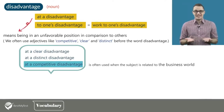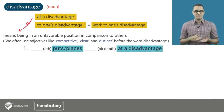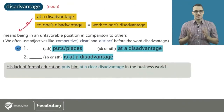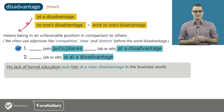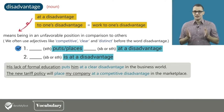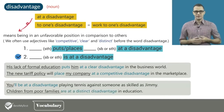So how do we use the phrase at a disadvantage? It can be used in two sentence patterns: something puts or places somebody or something at a disadvantage, and somebody or something is at a disadvantage. For example: his lack of formal education puts him at a clear disadvantage in the business world. The new tariff policy will place my company at a competitive disadvantage in the marketplace. You'll be at a disadvantage playing tennis against someone as skilled as Jimmy. Children from poor families are at a distinct disadvantage in education.